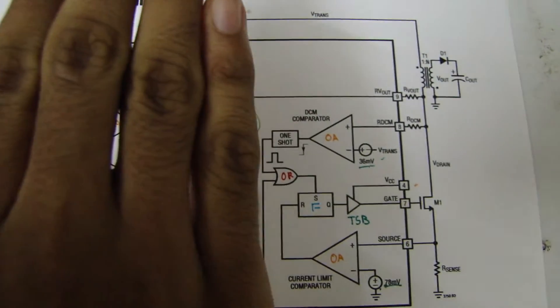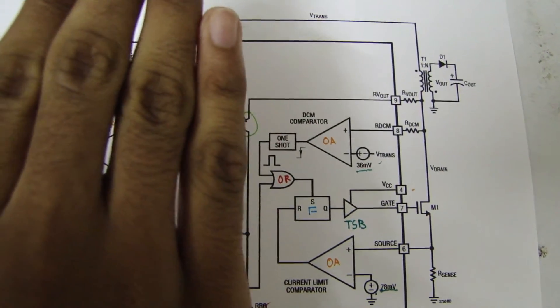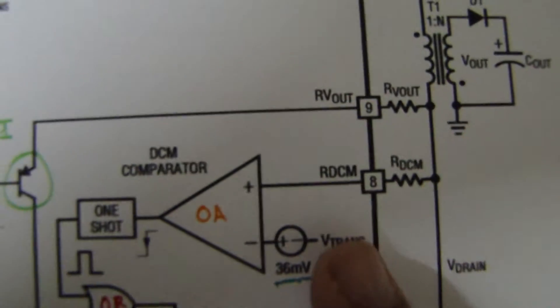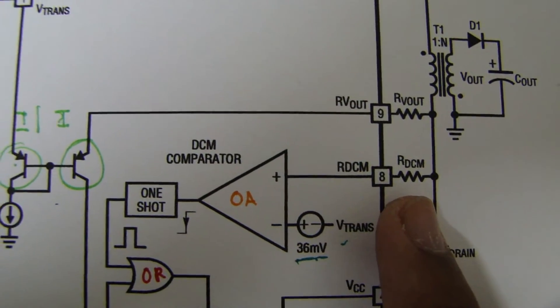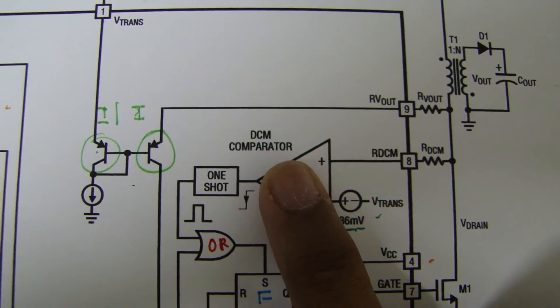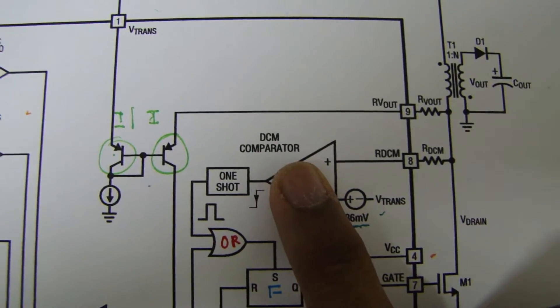Now on to the power modulating, frequency generating side of this circuit. Two op-amps, this measures this RDCM, I'm not sure what that means, a DCM comparator. Duty cycle mode, maybe not, I could be wrong.